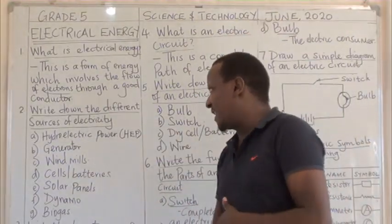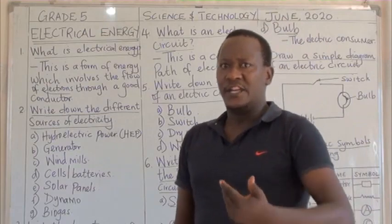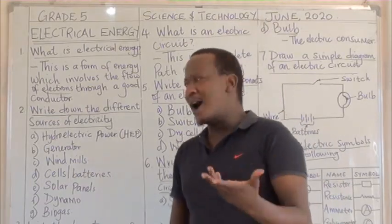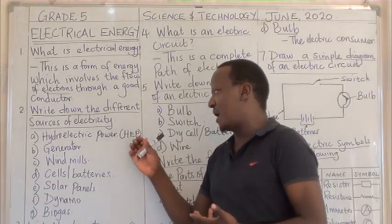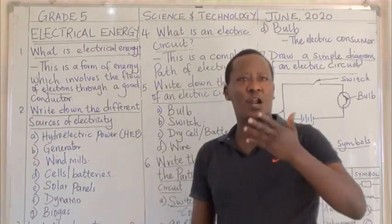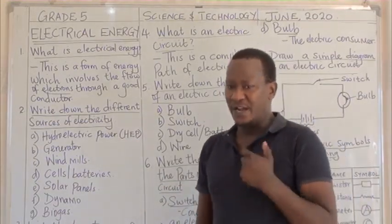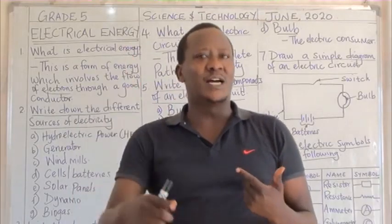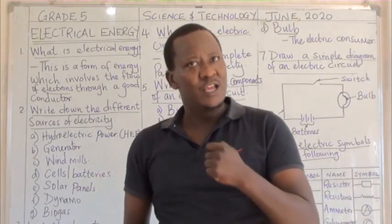This form of energy, electrical energy, is gotten from different sources — sources which generate electricity. One is hydroelectric power, in short HEP. H standing for hydro, E standing for electric, and P standing for power. This one is gotten from running water which runs some turbines, makes the turbines rotate, and then runs a generator which produces electricity.